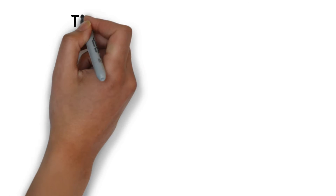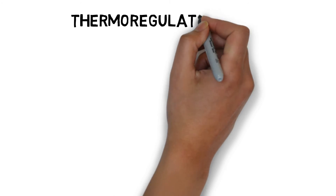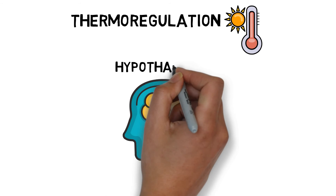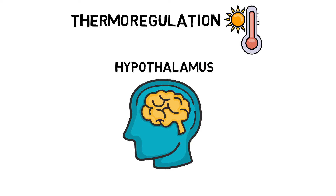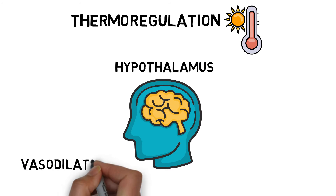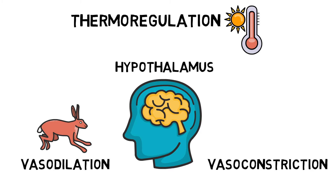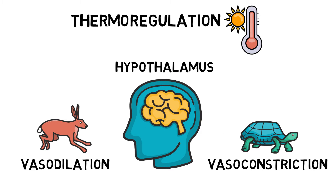Thermoregulation is the human body's ability to control temperature and has the potential to significantly affect performance. The body's core temperature ranges from 36.5 to 37.5 degrees Celsius and is regulated by the hypothalamus located in the brain. Vasodilation is when blood vessels widen to allow warm blood to flow near the surface of the skin so heat can be lost to the air. Vasoconstriction is when blood vessels narrow to reduce the flow of warm blood near the surface of the skin, reducing heat loss.